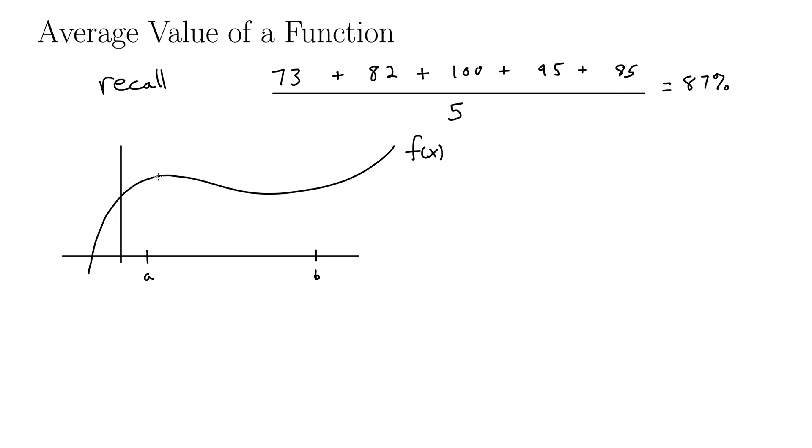Well, it's a similar approach. We could take a bunch of values on this function and add them up and then divide by the number of values that we have to get an average value of the function. So let's call the first one x1 star. You remember that notation from the limit definition of the integral. The second one is x2 star, the third one is x3 star, etc.